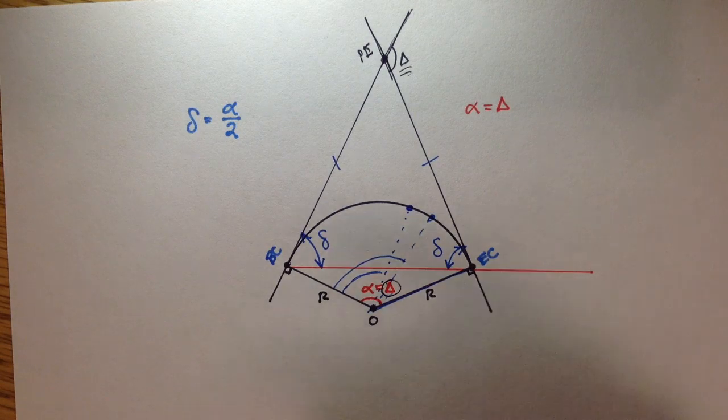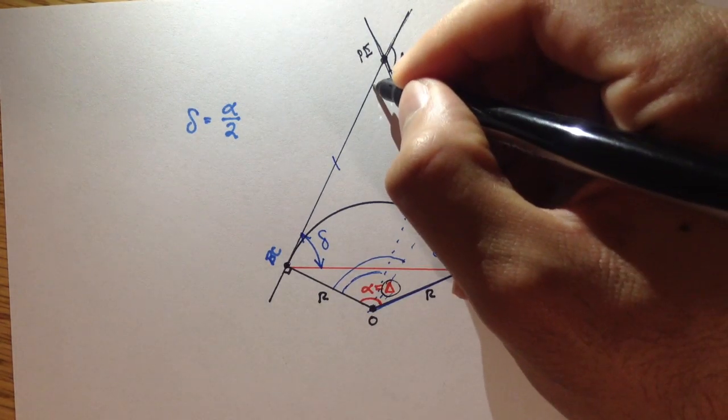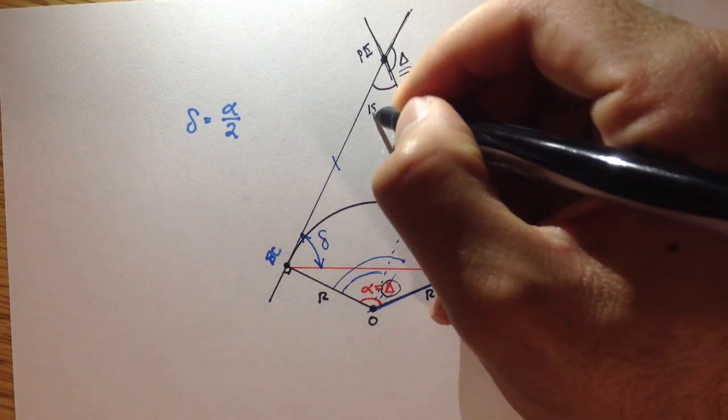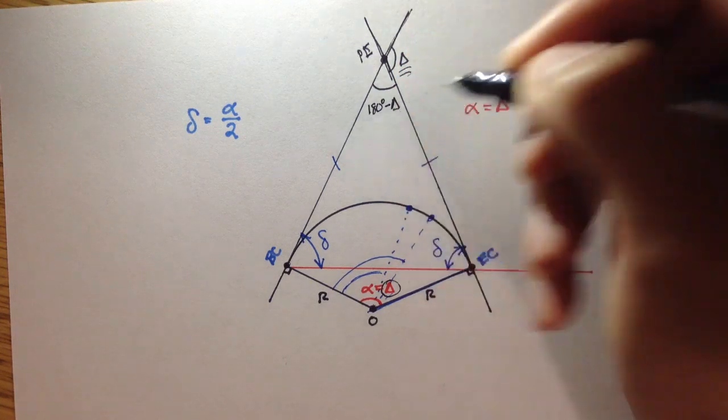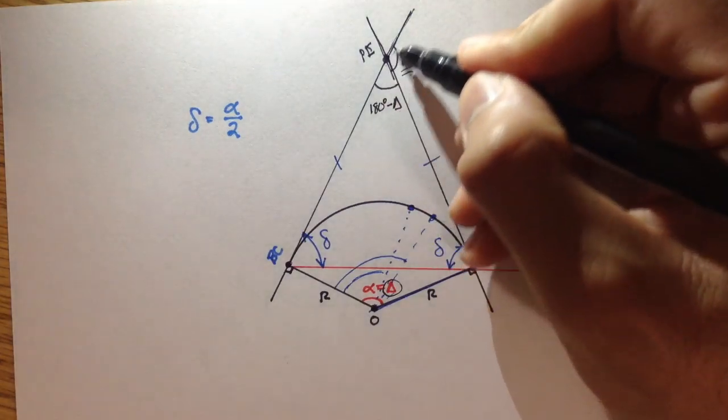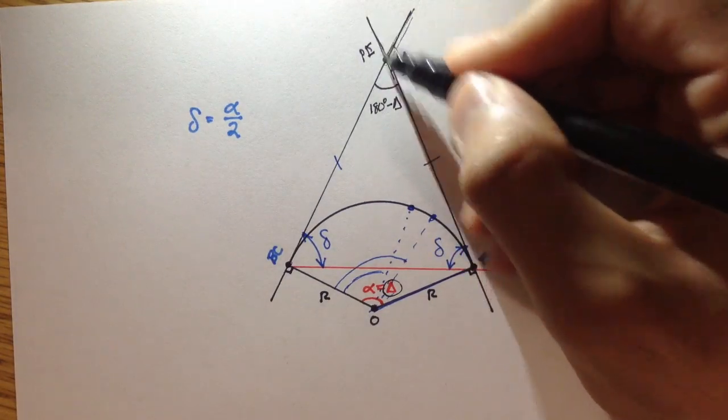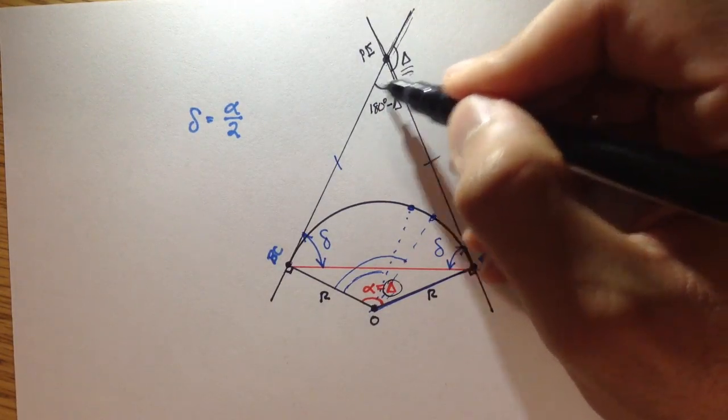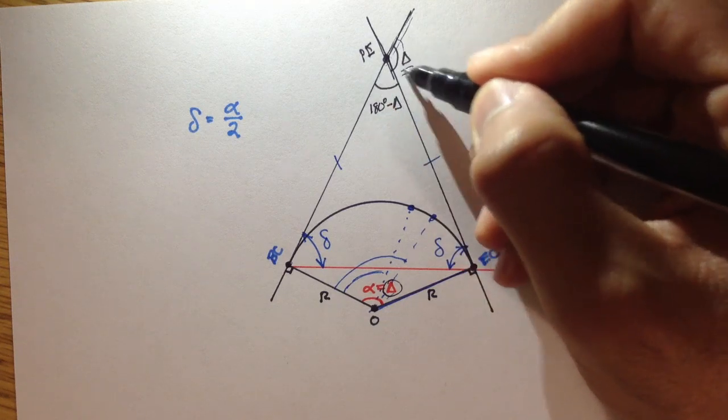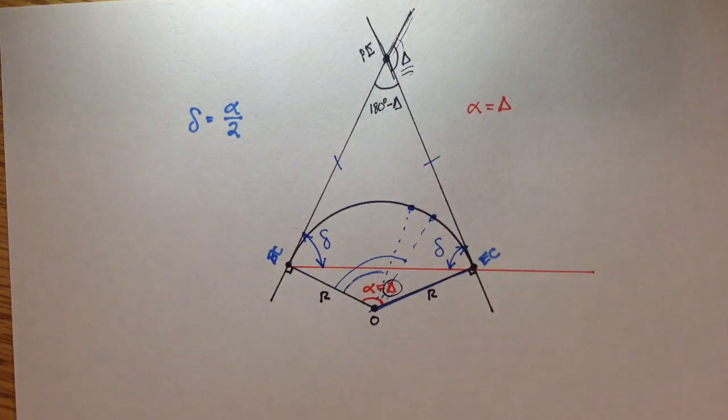So, if I said that this angle was big delta, well, this angle would have to be 180 degrees minus big delta. This is a straight line, and we have another line intersecting this, and this angle is simply 180 degrees minus this delta angle here.